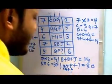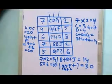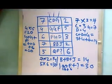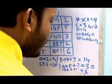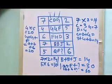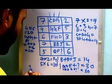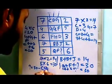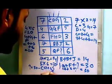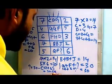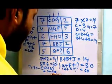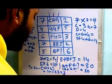So 17 plus 6 plus question mark equals 30. Question mark equals 30 minus 17 plus 6, which equals 30 minus 23, equals 7.